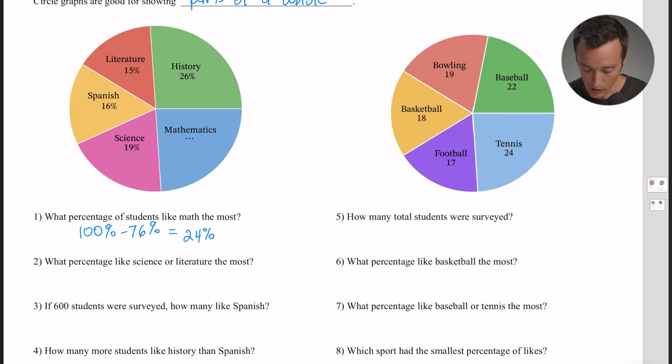Number two says what percentage like science or literature the most? A lot of times you'll get one of those where it's like what's the percentage of this or this happening - just add them together. So get the number for science which was 19% and then add it to the literature number which was 15%. What percentage of kids liked one or the other of those? If you add them together, it's 34% of students were either liking science or literature.